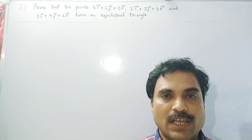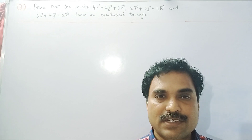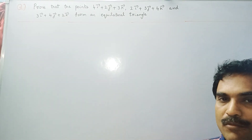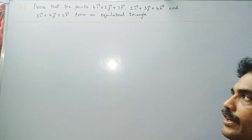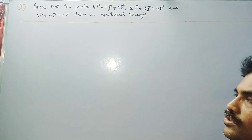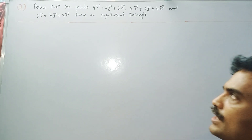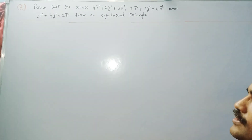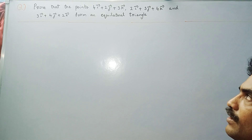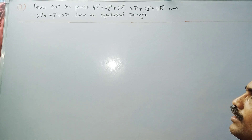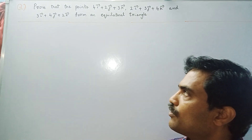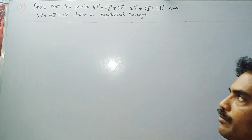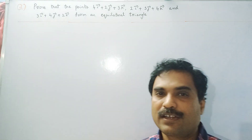Hi, welcome to my channel Anam Dakshasila. In this new video I am going to solve a mathematical problem under vector introduction. The question is: prove that the points 4i + 2j + 3k, 2i + 3j + 4k, and 3i + 4j + 2k form an equilateral triangle.